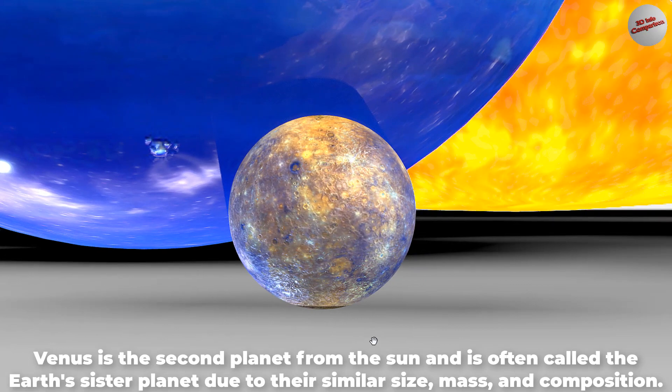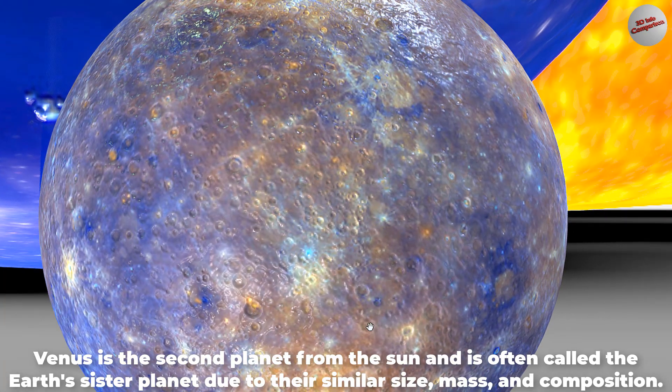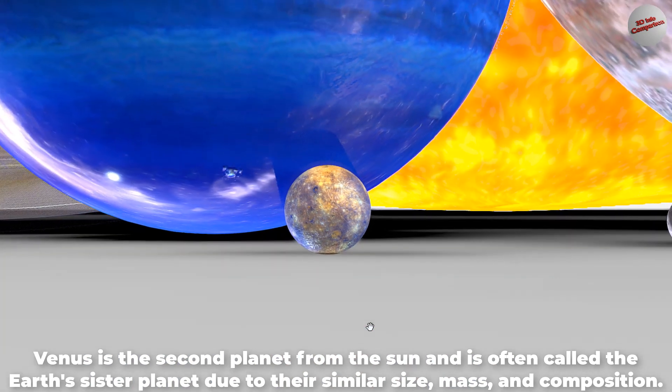Venus is the second planet from the Sun and is often called the Earth's sister planet due to their similar size, mass, and composition.